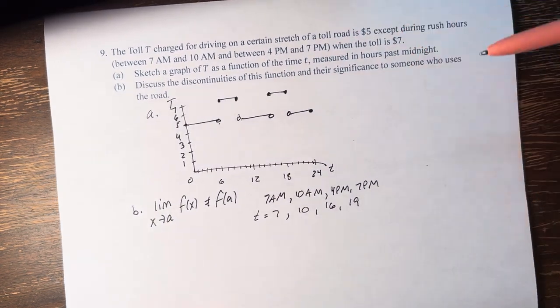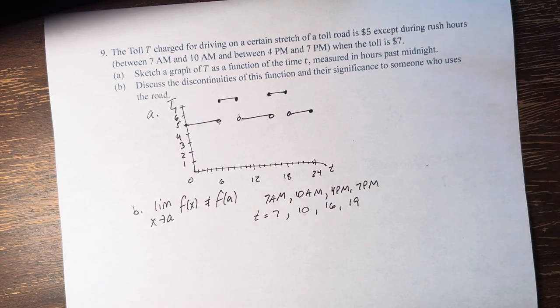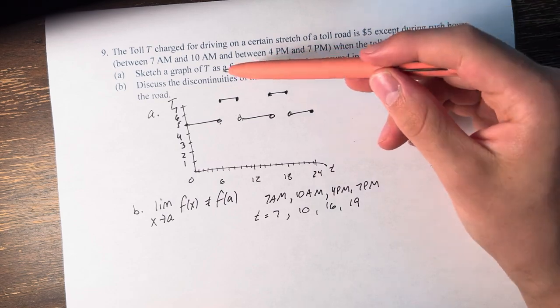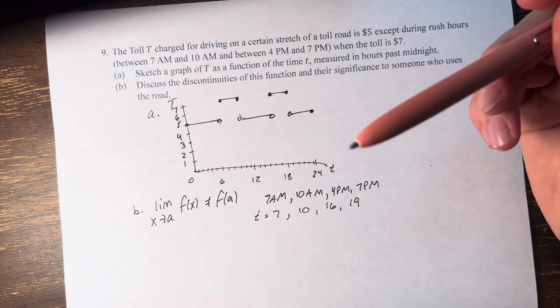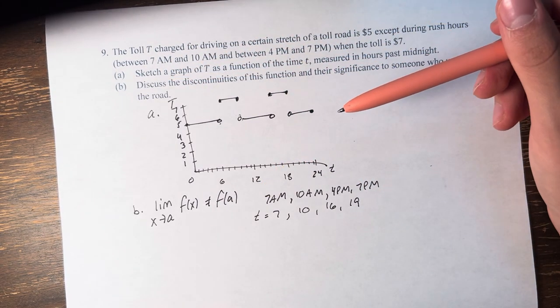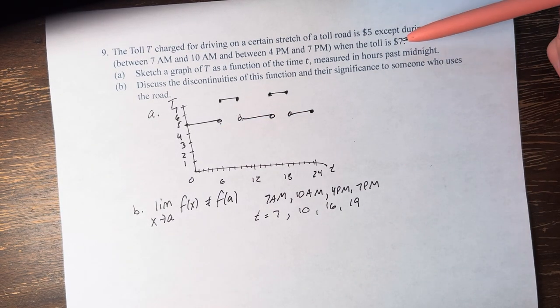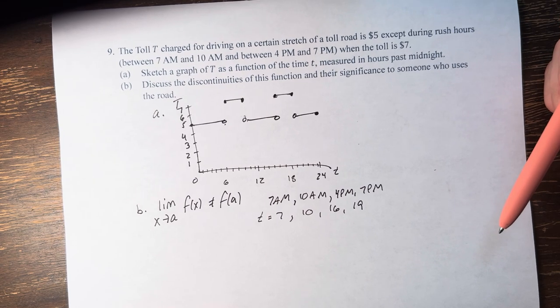Their significance to someone who uses the road: If somebody is looking to drive between the hours of 4 and 7 p.m. or 7 a.m. and 10 a.m., then they might consider switching the time at which they are driving to earlier or later in order to avoid the higher toll for rush hour traffic.